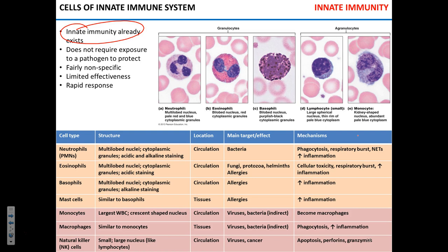Neutrophils are found in circulation and protect against bacteria through phagocytosis. I want to specifically highlight respiratory bursts — they produce oxidative chemicals that kill cells. Neutrophils also produce extracellular traps, throwing DNA into other cells, and they can specifically increase inflammation.